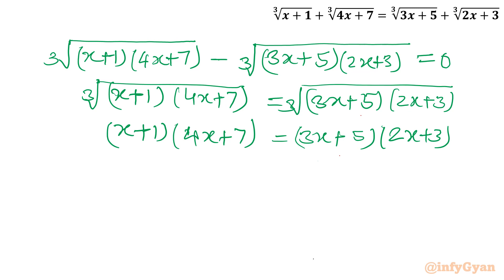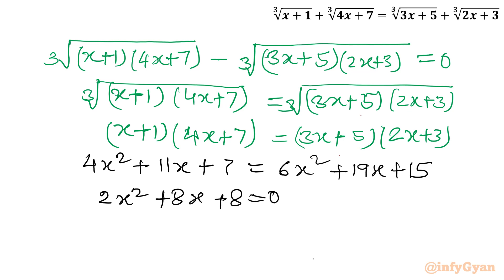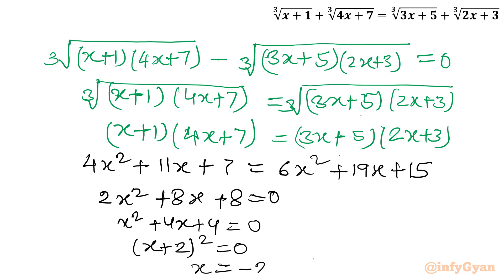Bringing all terms to one side: (6−4)x² + (19−11)x + (15−7) = 0, which is 2x²+8x+8 = 0. Dividing by 2: x²+4x+4 = 0, which factors as (x+2)² = 0. So x = −2 is a repeated root. This is our second solution.